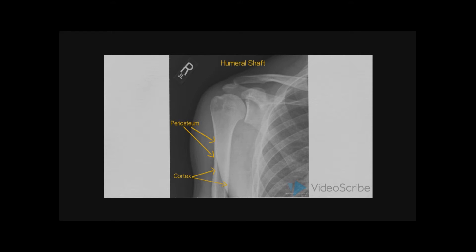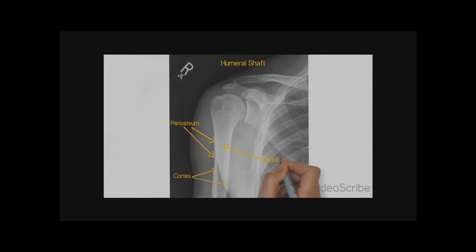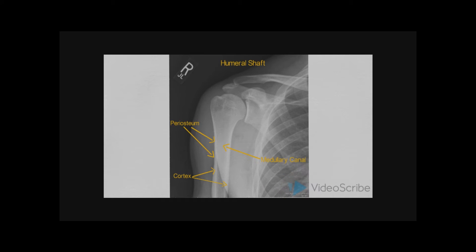The cortex needs to be continuous with consistent density and thickness. Then we need to look at the medullary canal. Once again, we assess for density, consistency, and for any intraosseous lesions.